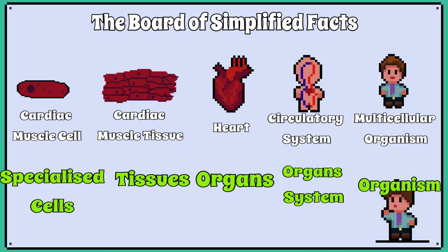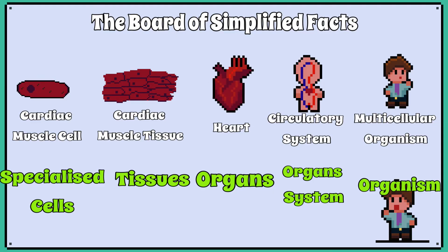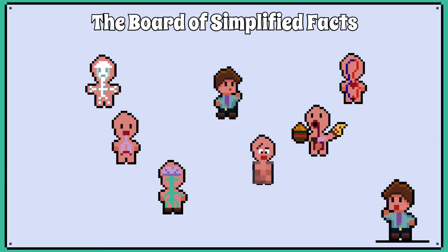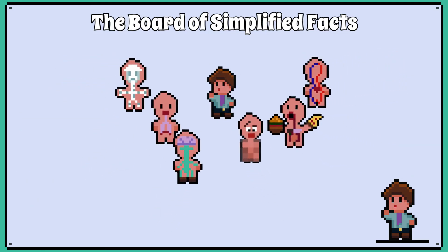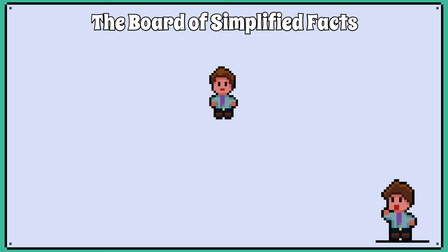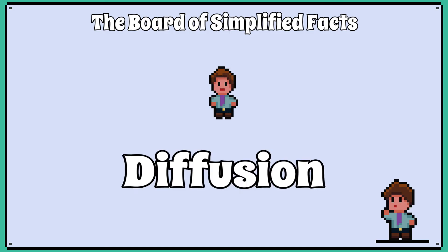Specialised cells, tissues, organs, organ systems to organism — you must remember this order of organisation for your exam. The more aware you are of the biology of the human body, the easier this section of the course is. In the next lesson, we will learn about diffusion.